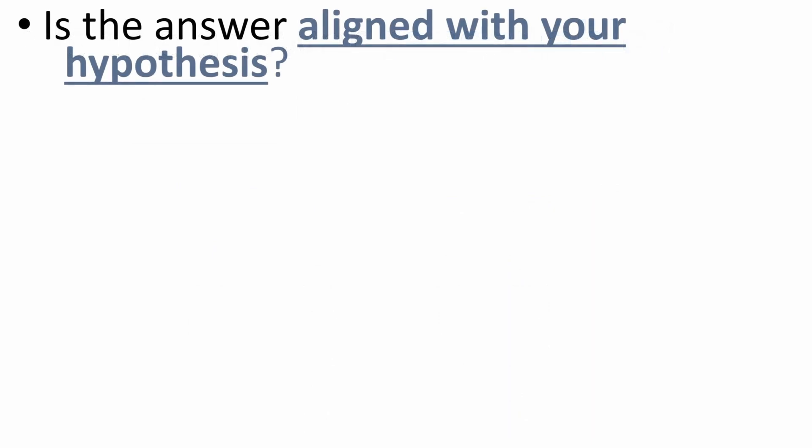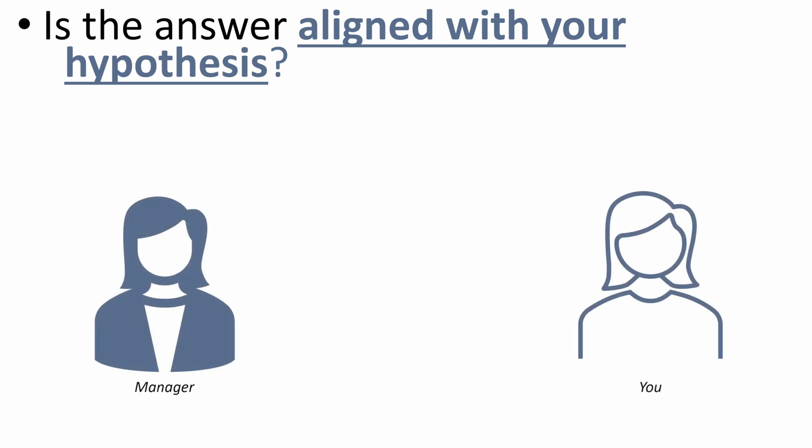Number two: is this answer aligned with your hypothesis? Whenever you take on a specific analysis working with your manager, you're going to have a specific goal you're trying to achieve or a specific answer you expect to find when you complete the analysis. This is the hypothesis-driven approach — to avoid boiling the ocean and pursue an 80-20 strategy for solving something in a streamlined, efficient way. What that really means is you want to know what you're trying to solve for, to prevent yourself from just doing analysis for analysis's sake. Every time you do a specific piece of analysis, you should know what you're trying to get to and what answer you expect to find.